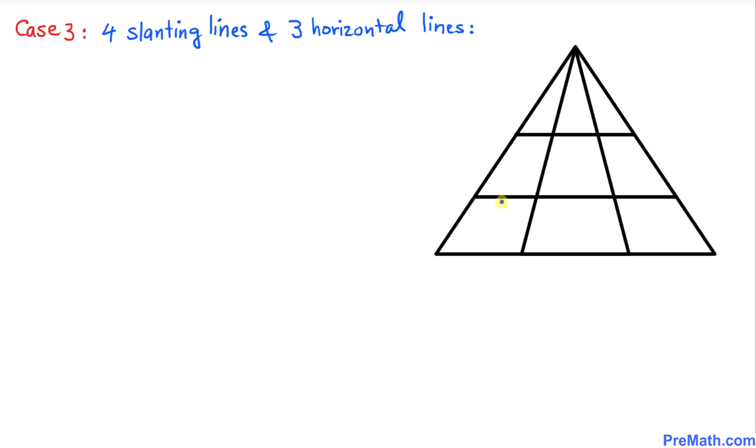We're going to repeat the same process that we did in the very first scenario. Let's put down one, two, three. Let's put a plus sign in between. One plus two plus three is going to be six. So far so good. Now let's count how many horizontal lines there are. There are three horizontal lines.